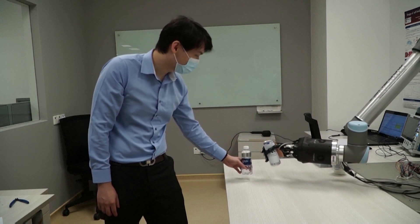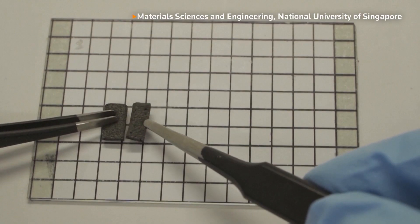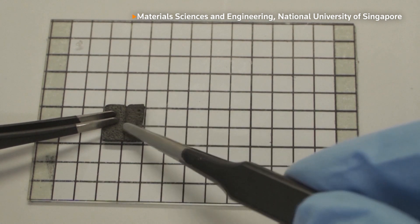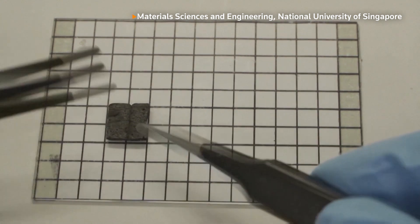The smart foam can also repair itself when damaged. Check out this piece for instance. When cut in half, it can fuse back into one piece.